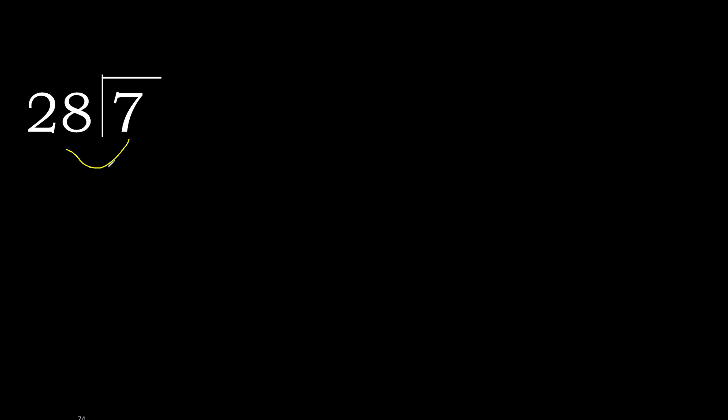7 divided by 28. 7 is less than 28, therefore complete — always complete with 0. Here, 0 point.